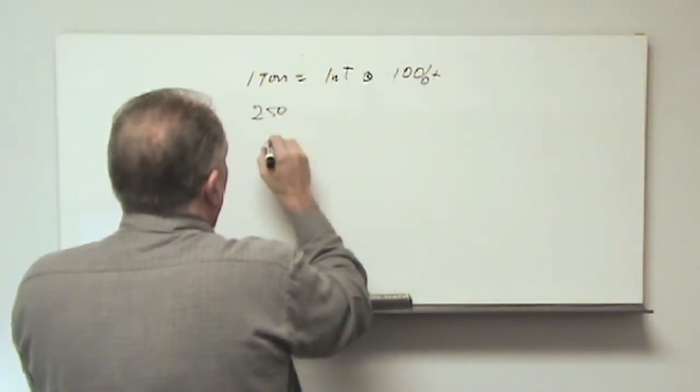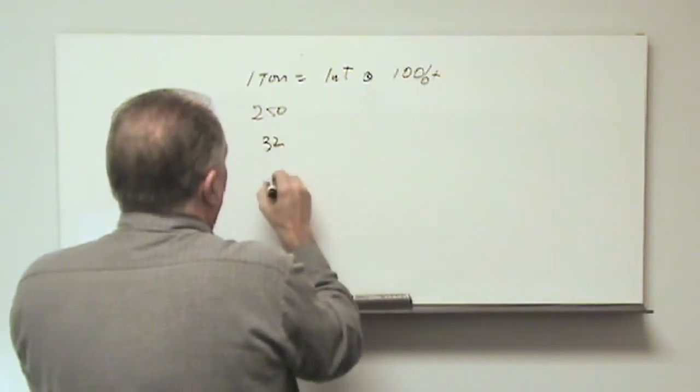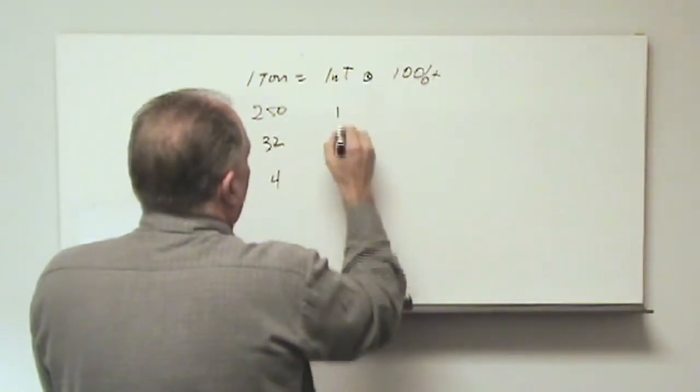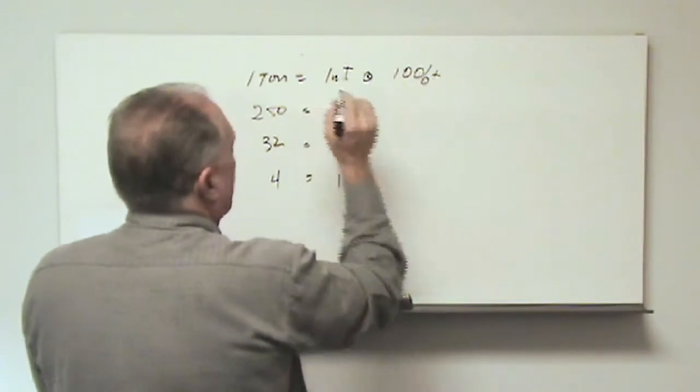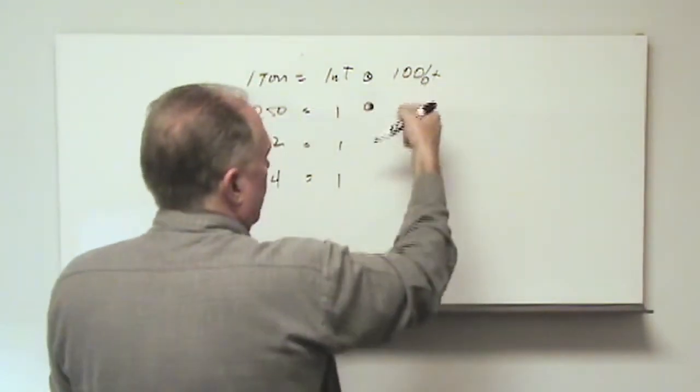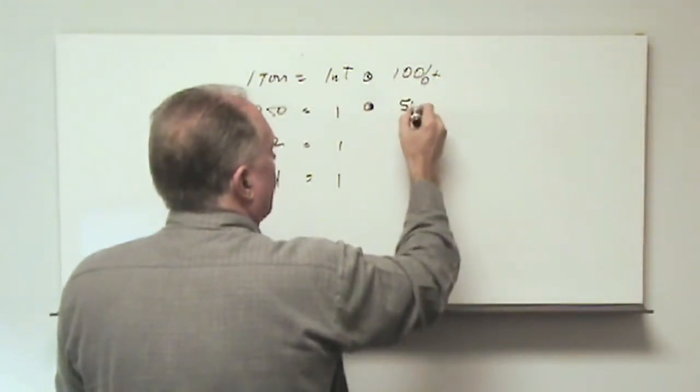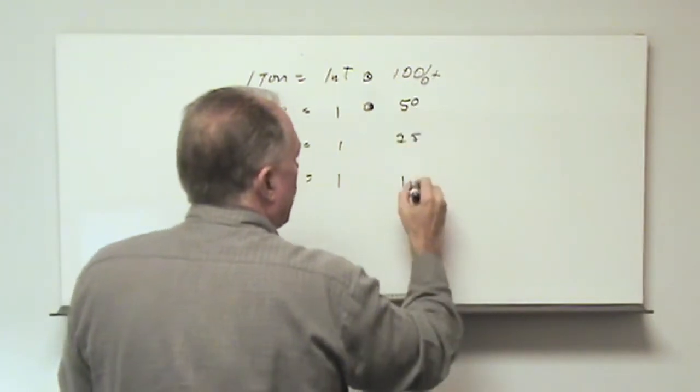We could take this down to 250 pounds, we could take this down to 32 pounds, we could take this down to 4 pounds, 1 nanotesla, 1 nanotesla, 1 nanotesla, and these distances would halve. So 50 feet, 25 feet, 12 feet.